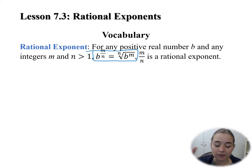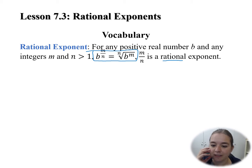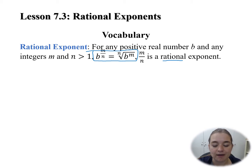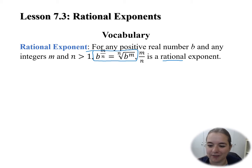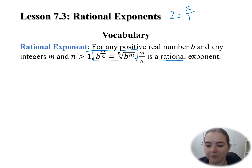This relies on knowing the definition of a rational number. A rational number is any number that we can represent as a fraction of integers. In the rational exponent definition, m and n are integers. I can represent most numbers as a rational number if I can write it as a fraction of integers. For example, the number 2 is equivalent to 2 over 1.